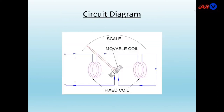This is the circuit diagram. The fixed coil is divided into two parts and carries a current I. In between these two fixed coils we place a movable coil. The magnetic field set up by the two fixed coils moves this movable coil, which has a pointer attached moving over a calibrated scale. This is the basic circuit of the electrodynamometer.